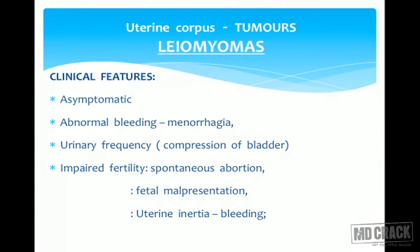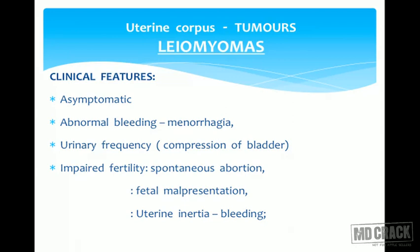Leiomyomas may remain asymptomatic. Submucosal leiomyomas erode the endometrial surface and cause abnormal bleeding and menorrhagia. They can compress the bladder causing urinary symptoms. Submucosal leiomyomas can also cause infertility by hampering implantation of the fertilized egg, cause abortions, and lead to fetal malpresentations. Cervical fibroids can cause problems during delivery, uterine inertia, and bleeding. Clinical outcome depends on the fibroid's size and location.